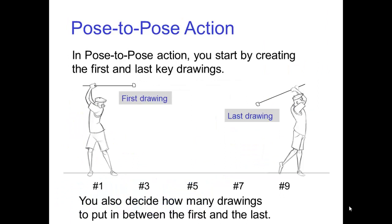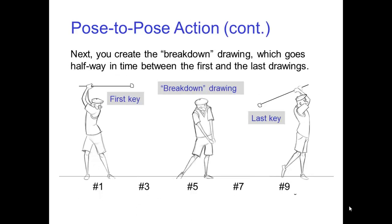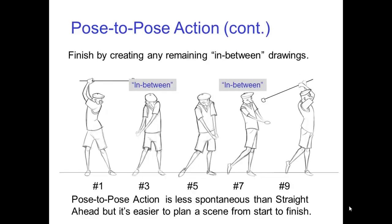In pose to pose action, you start by creating the first and last key drawings. You also decide how many drawings to put in between the first and the last. Next, you create the breakdown drawing, which goes halfway in time between the first and the last drawing. You then finish by creating any remaining in between drawings. Pose to pose action is less spontaneous than straight ahead, but it's easier to plan a scene from the start to the finish.